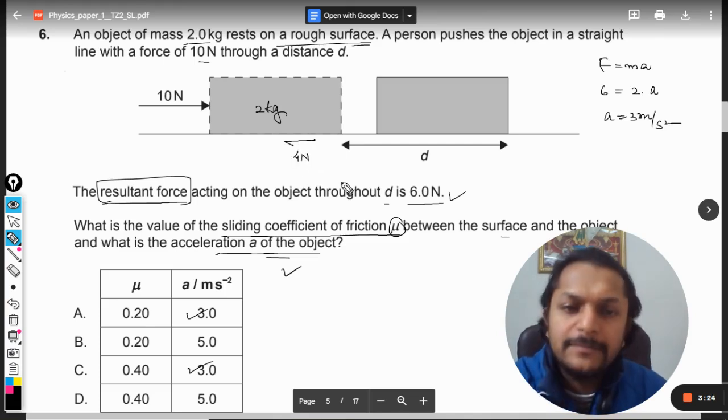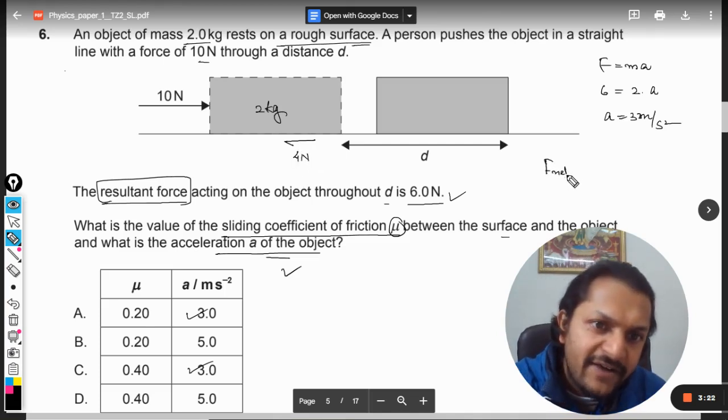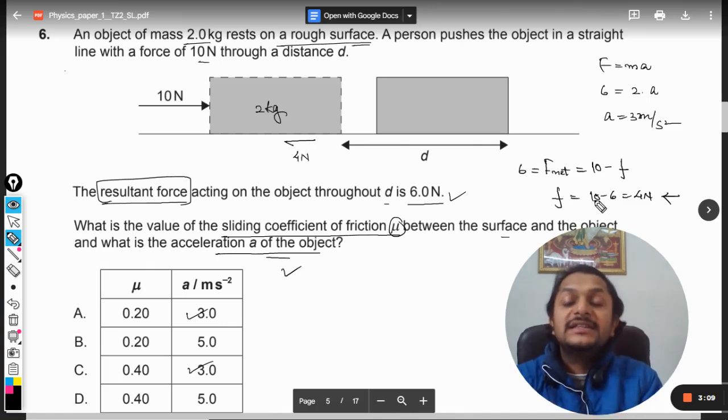That is given in the question. It only means that this is 4 Newton. So I can say that F_net is equal to 10 minus friction, and F_net is taken as 6. So friction is taken to the other side: 10 minus 6 is 4 Newton. So this is how we find it. 4 Newton is the force.